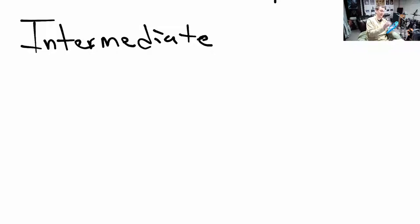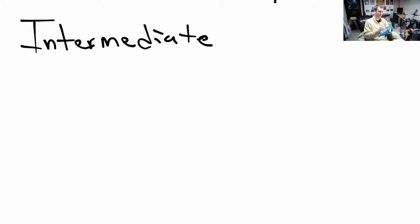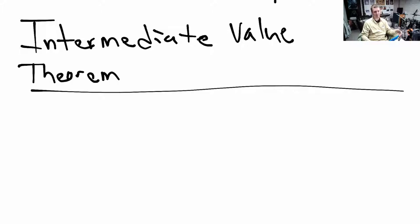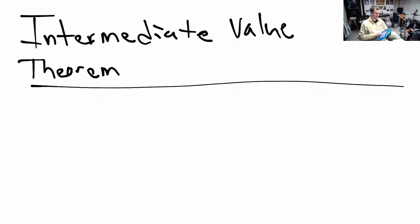The next thing is a theorem about polynomials called the intermediate value theorem. For those of you who wish to continue in math, this is a hugely important theorem — you're going to use it for as long as you do math. This is the statement in pictures: if we've got a polynomial with a point at a giving P of a, and a different input b, and if they have opposite signs — one's above the x-axis and one's below — then there is some C between a and b such that P of C equals zero.